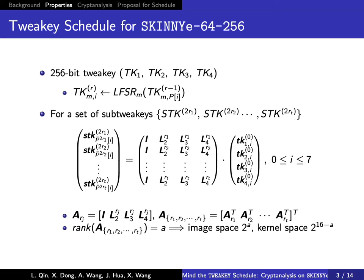we can derive the sub-tweakeys from the same cell of the master key as a system of linear equations, where Li is a 4×4 binary matrix corresponding to each LFSR. The rank of the coefficient matrix A is our most important constant.